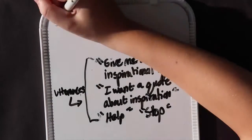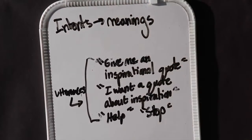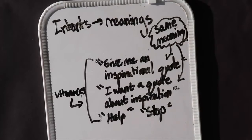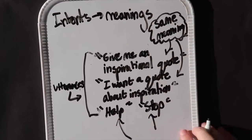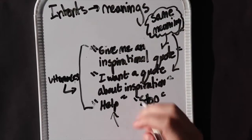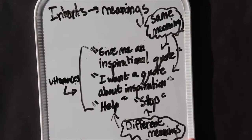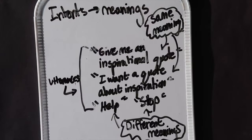The second part is to create intents, or meanings that our utterances will be mapped to. We can say a lot of different things that have the same meaning. For example, 'give me an inspirational quote' and 'I want a quote about inspiration' have the same meaning — they would be mapped to the same intent. Similarly, 'stop' and 'quit' both map to the same intent to exit. However, 'help' and 'stop' have different meanings and would be mapped to different intents.